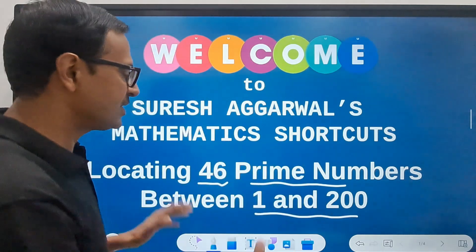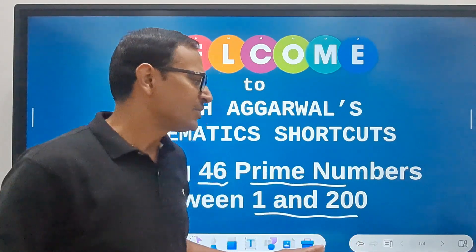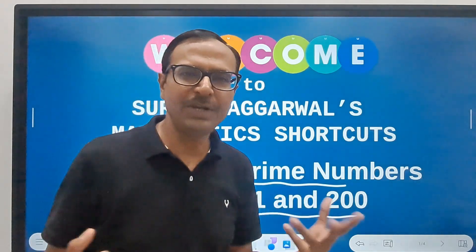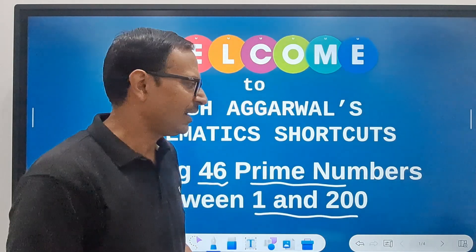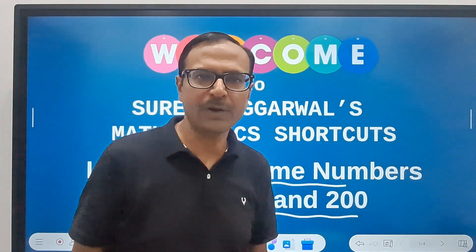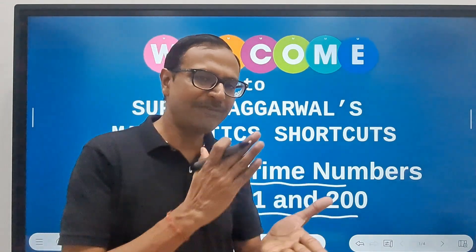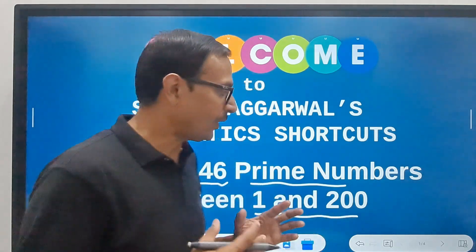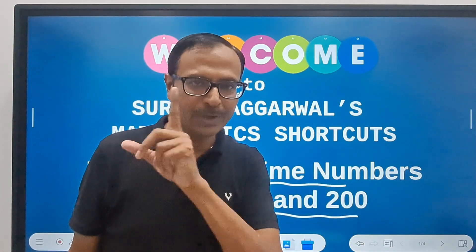Yes, there are 46 prime numbers between 1 and 200. You must have seen so many videos on YouTube where they have demonstrated the method for finding the prime numbers between 1 and 100. Now I am going to extend that method up to 200.